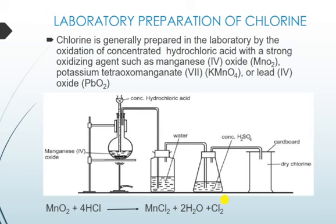An alternative method is that chlorine can be prepared by heating a mixture of sodium chloride, manganese dioxide, and sulfuric acid. The acid first reacts with the sodium chloride to give hydrogen chloride.